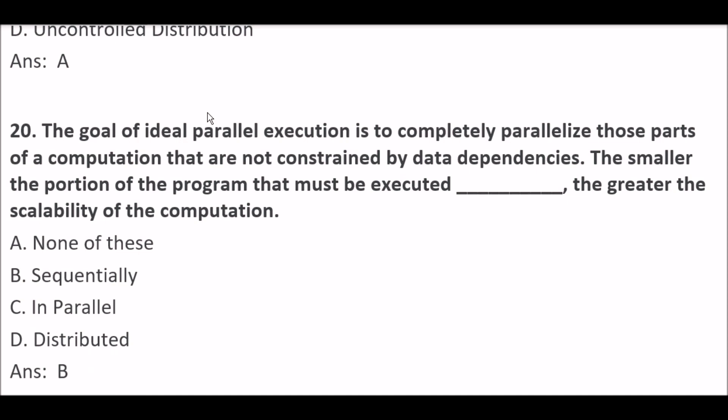Next question. The goal of ideal parallel execution is to completely parallelize those parts of a computation that are not constrained by data dependencies. The smaller the portion of the program that must be executed blank space, the greater the scalability of the computation. Option A: None of these. Option B: Sequentially. Option C: In parallel. Option D: Distributed. Right answer is Option B — Sequentially.